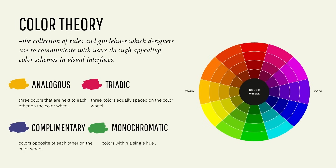There are specific colors that work really well together, and that's when you get into the concept of color theory — the scientific aspect behind which colors go well together. There are four types: analogous, triadic, complementary, and monochromatic. Analogous are colors next to each other on the color wheel. Triadic are equally spaced on the color wheel. Complementary are opposite each other on the wheel. Monochromatic are colors within a specific hue. I'll show you examples of what that looks like.